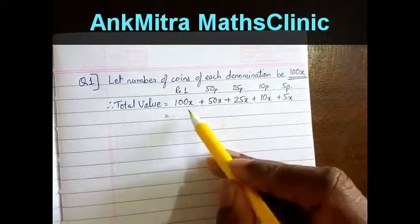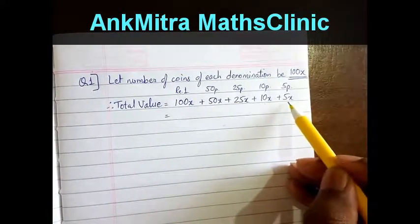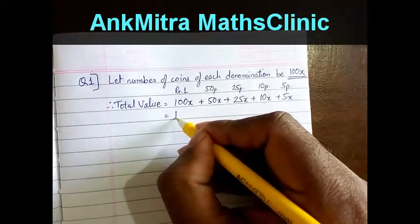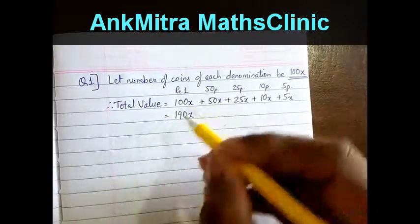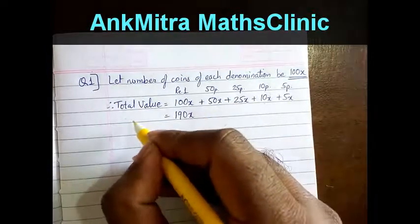So the total value will be 100x plus 50x plus 25x plus 10x plus 5x which comes to 190x, and they are given that the total value of all the coins is equal to 380.